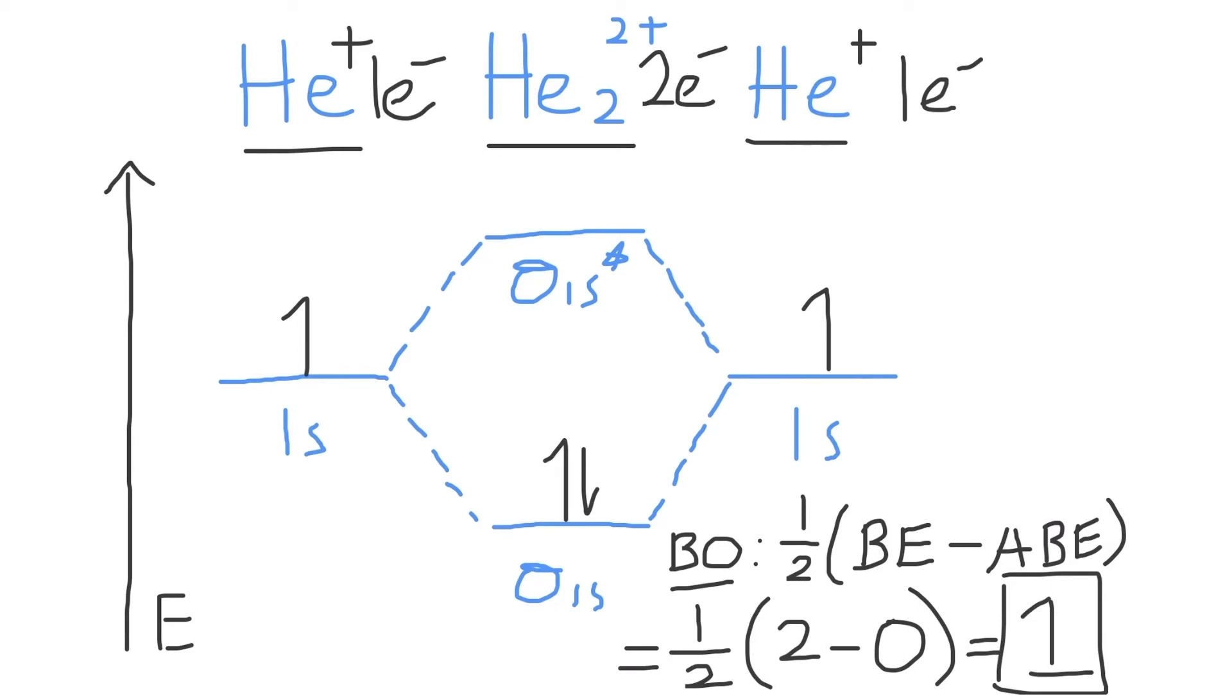So the Lewis dot structure for He₂ 2+ would consist of two helium atoms, or more precisely, helium cations, bonded together with a single bond, and a total net charge of 2+ on the structure.